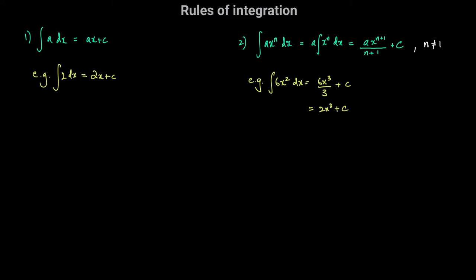Since integration is the reverse process of differentiation, if we had 2x cubed plus c and found its derivative, we would get 6x squared. For integration, we increase the power and divide by the new power. For differentiation, we multiply by the power and decrease the power by 1.